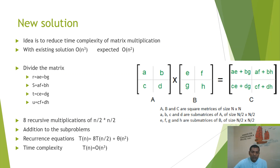How many recursive multiplications can we achieve? Counting them: 1, 2, 3, 4, 5, 6, 7, 8 — we have 8 recursive multiplications. Each subproblem is of size (N/2) × (N/2), and that is how recursive multiplication can be implemented.